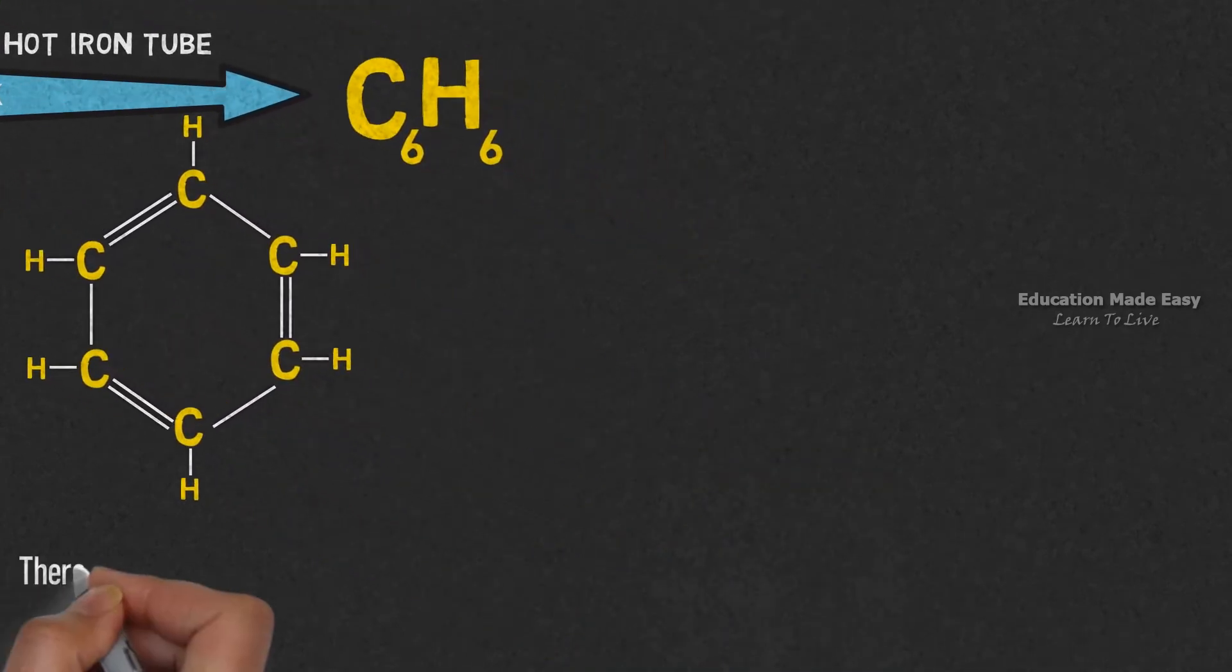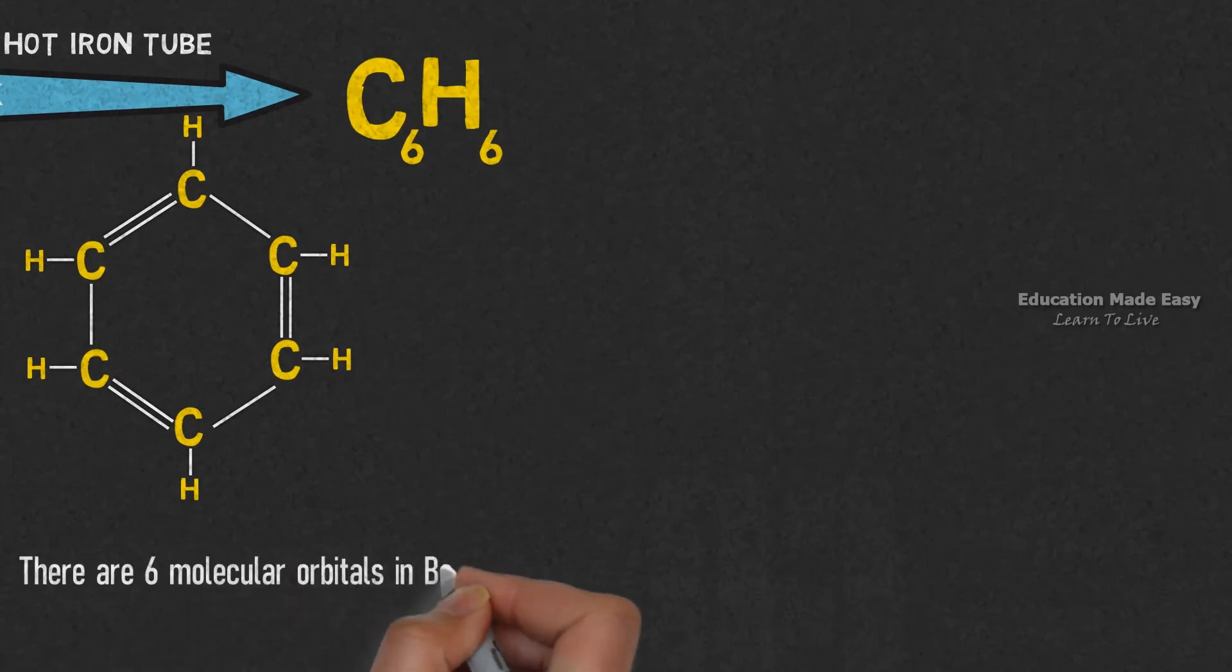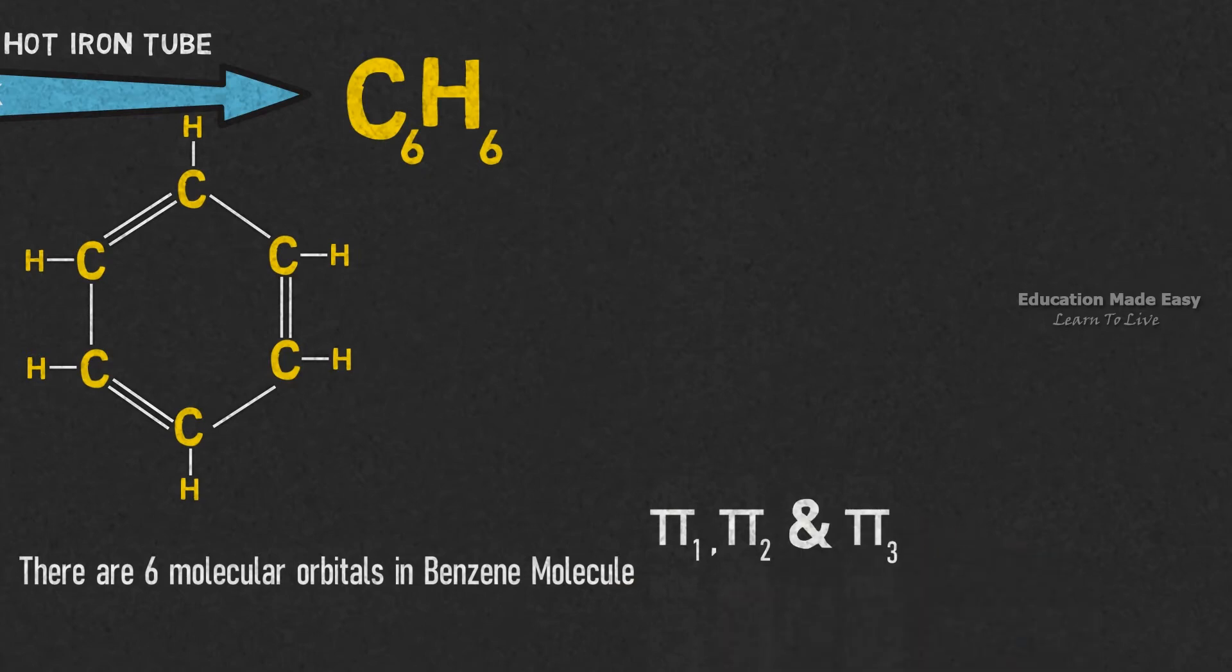There are six molecular orbitals in benzene molecules arranged in two groups. Pi1, Pi2, and Pi3 are the first group, and Pi4, Pi5, and Pi6 belong to the second group. Among these six molecular orbitals, Pi1, Pi2, and Pi3 are the bonding molecular orbitals.